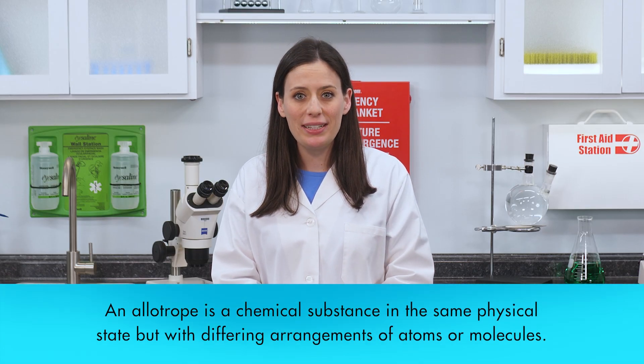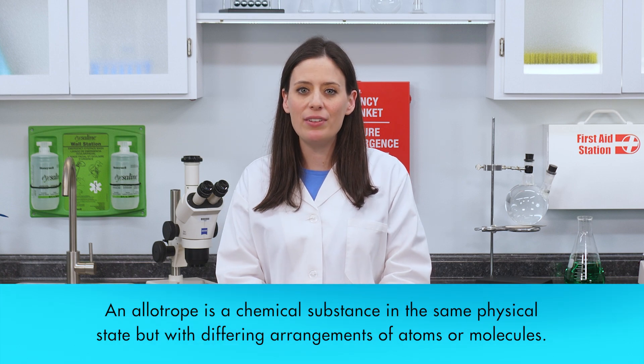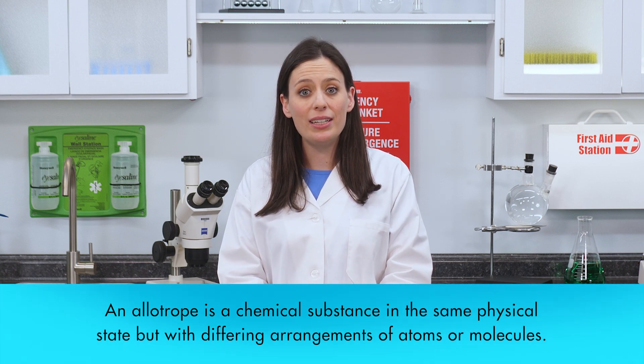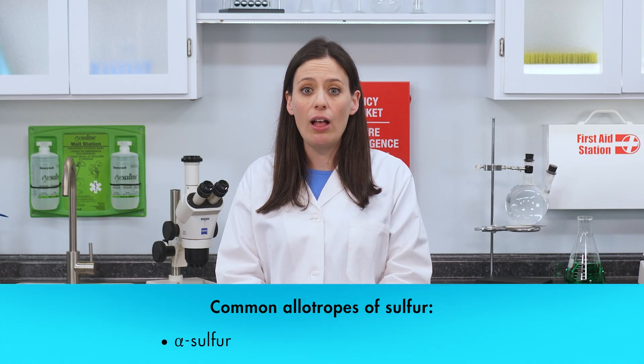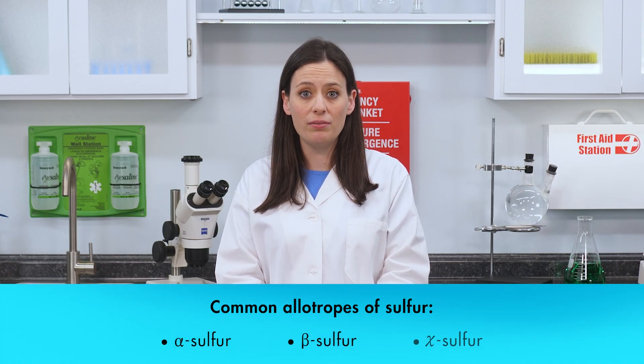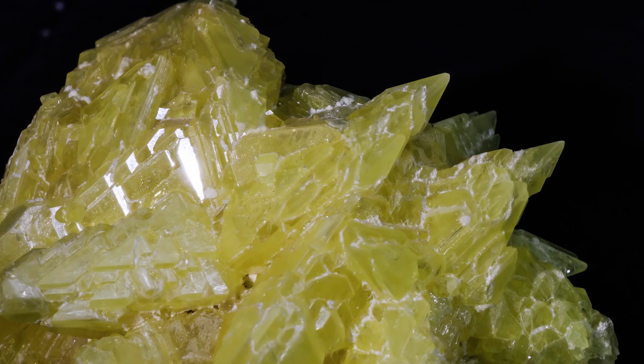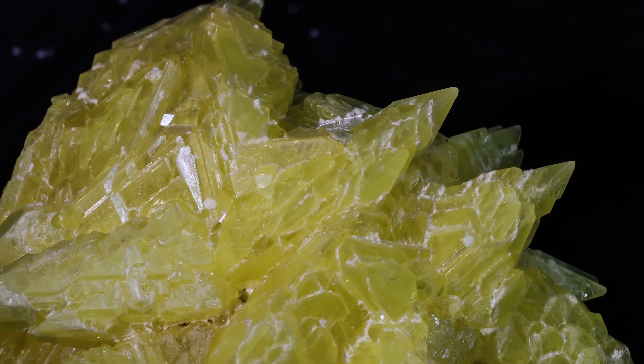The different elemental forms of an element are called allotropes. An allotrope is a chemical substance in the same physical state, but with differing arrangements of atoms or molecules. Sulfur exists as about 30 different allotropes. Some of the more common allotropes are indicated with Greek letters, such as alpha-sulfur, beta-sulfur, and chi-sulfur. The most common allotrope is alpha-sulfur.